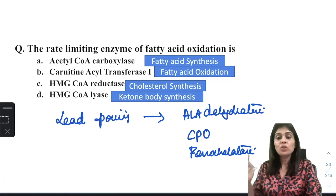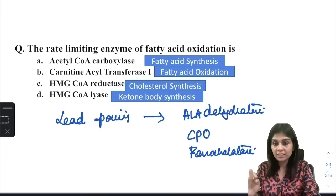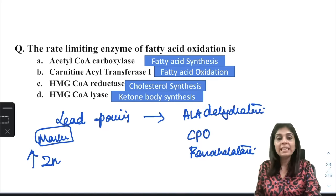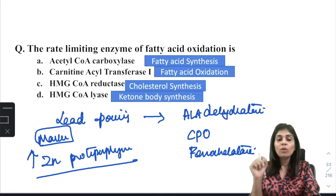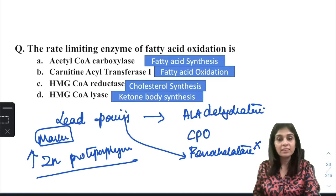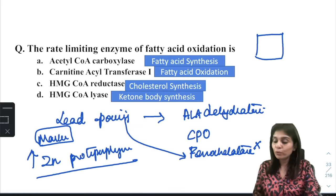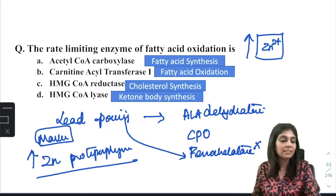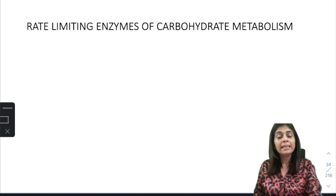The sensitive marker for lead poisoning is elevation of zinc protoporphyrin levels. Because lead inhibits ferrochelatase, iron cannot be chelated into the protoporphyrin ring. Instead, zinc gets chelated in its place, so zinc protoporphyrin levels are elevated — that is a sensitive marker for lead poisoning.